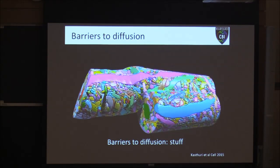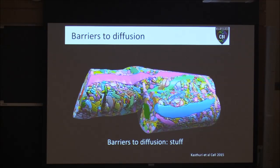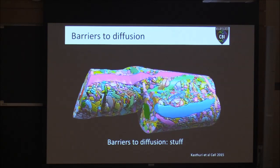The second barrier to diffusion I call 'stuff.' This is a really neat image from the Lichtman lab showing brain tissue — trying to find free space in that piece of tissue is nearly impossible, just cells on top of cells. Trying to diffuse through this is incredibly difficult. Obviously this is on the tissue level, but an antibody works on the molecular level — and inside the cell it's the same thing. There's not a lot of free space; things are packed in very tightly.